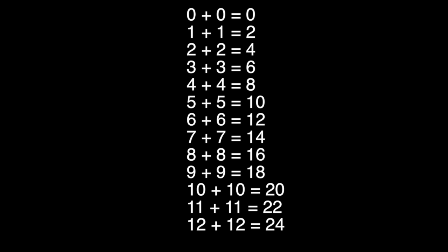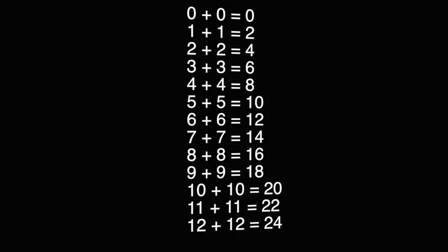The sums go up by two because when you write doubles facts, you increase each addend by one, which means that you are actually adding two more numbers to the number sentence, so the sum goes up by two each time.